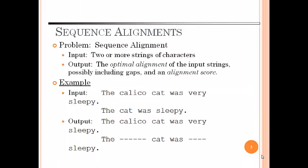Sequence alignment is a way of arranging segments of DNA, RNA or protein to identify reasons of similarity that may be a consequence of functional, structural, or evolutionary relationships between the sequences. The problem is sequence alignment. The input is two or more strings of characters and the output is the optimal alignment of the input strings, possibly including gaps and an alignment score, as you can see in the example here.